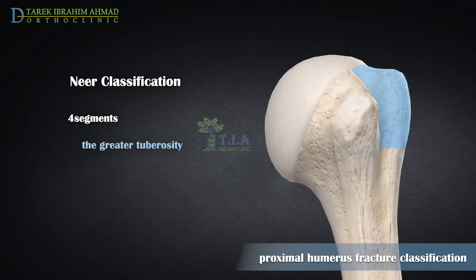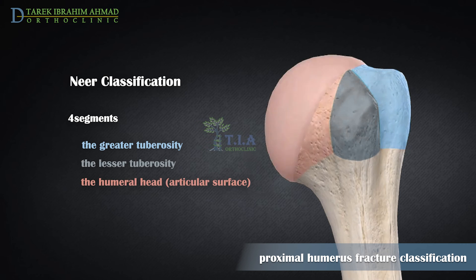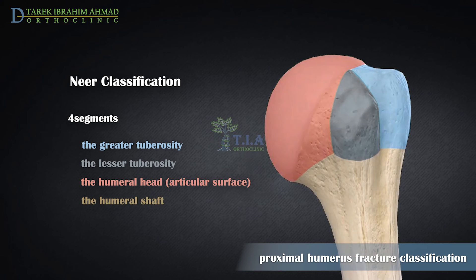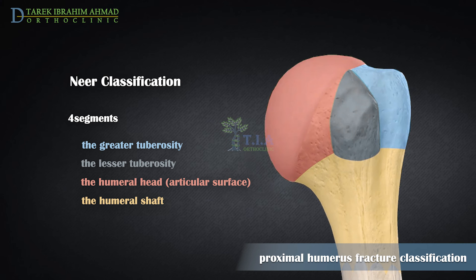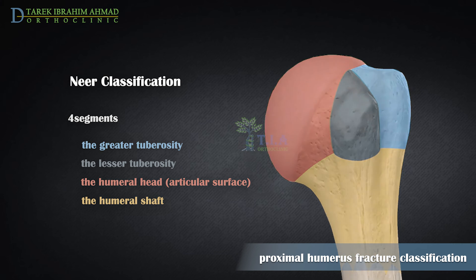The four segments are: the greater tuberosity, the lesser tuberosity, the humeral head including articular surface, and the humeral shaft. Fractures are defined by the number of parts involved — one part through four part — with additional categories for articular fracture and dislocation.